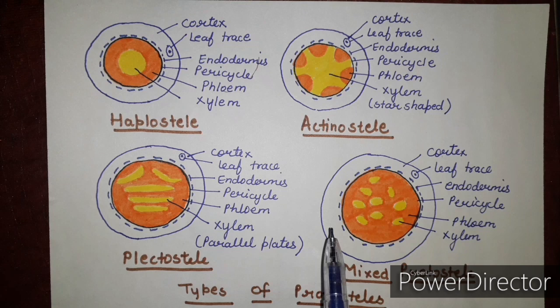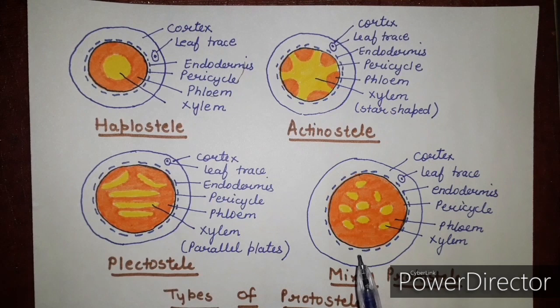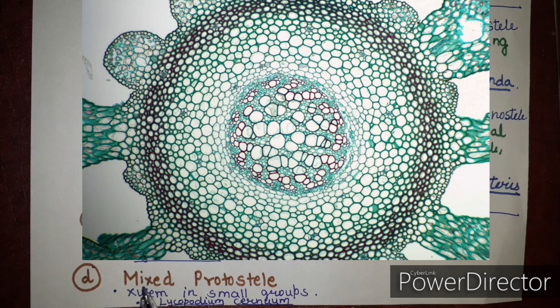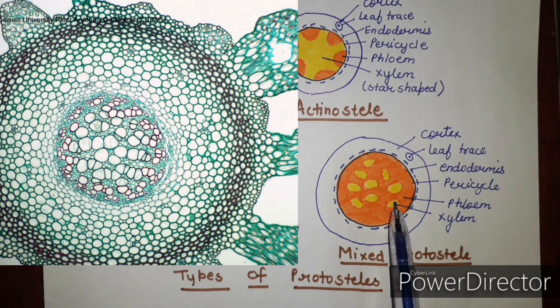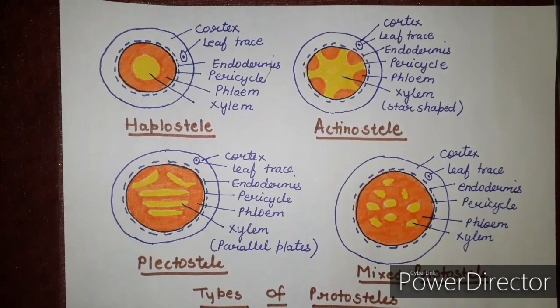The last type of protostele is the mixed protostele, in which xylem is present in small clusters or small groups, and phloem is present all around. The example is Lycopodium cernum. Different species of Lycopodium thus exhibit different types of protosteles.